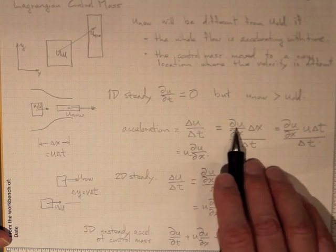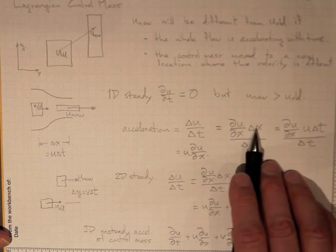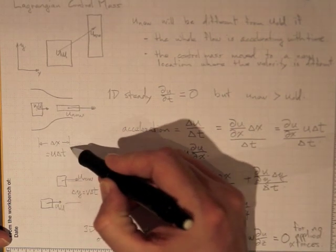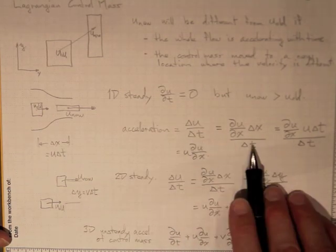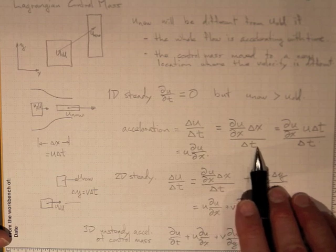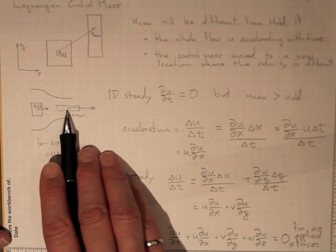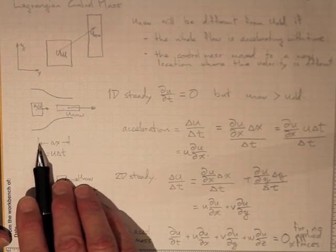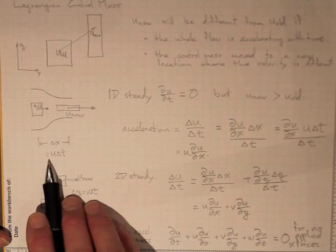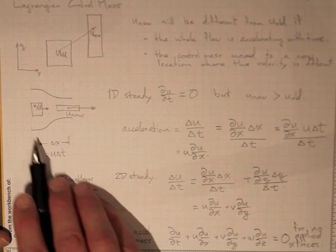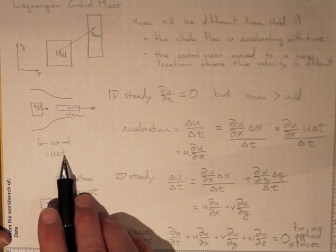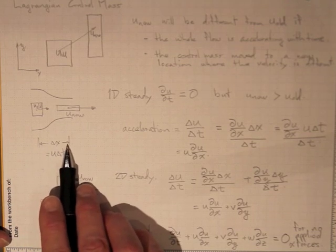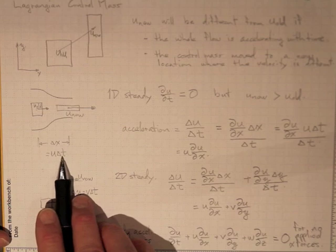The change in velocity will just be ∂u/∂x times Δx, where this is Δx, the distance it traveled, and Δt divided by Δt. Well how far will it travel? How far will it go Δx in how long a time? Well if it's going at a velocity u then u times Δt is the distance it will travel in time Δt.